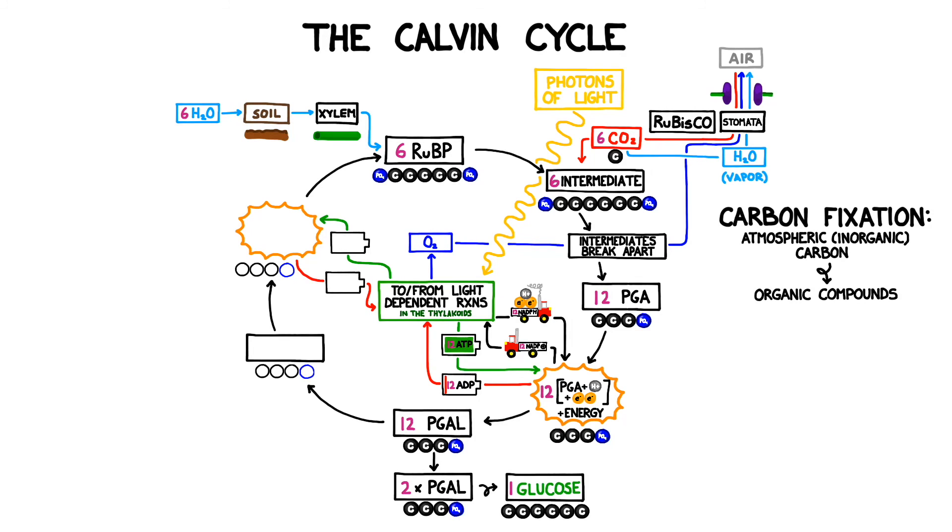2 PGAL can be converted into one glucose molecule. However, we won't be spending all of our PGAL here. Remember that the Calvin cycle is a cycle. It comes back to where it started. We're going to spend two of the 12 PGAL to make one glucose, and then we're going to reinvest the other 10.